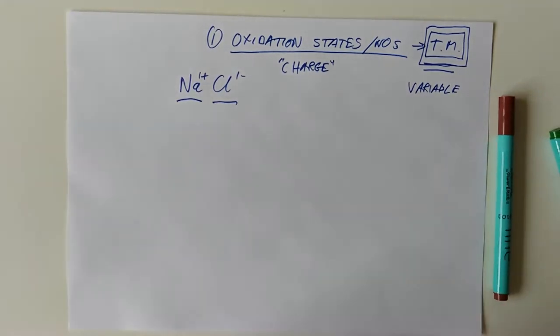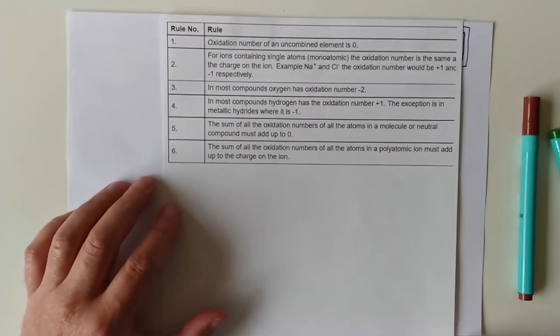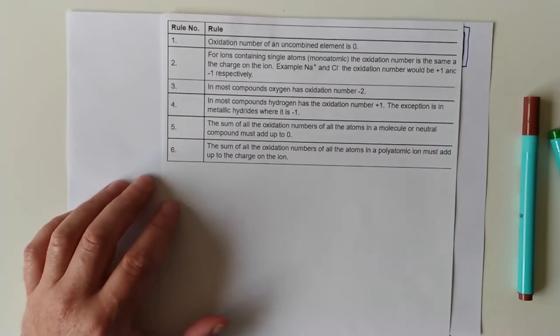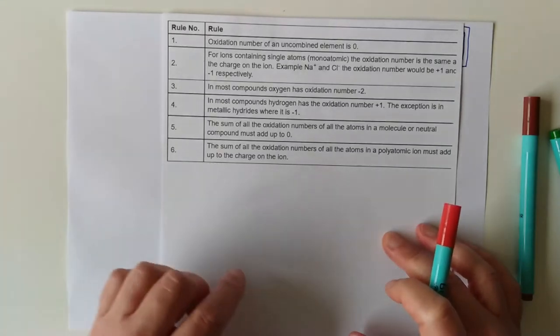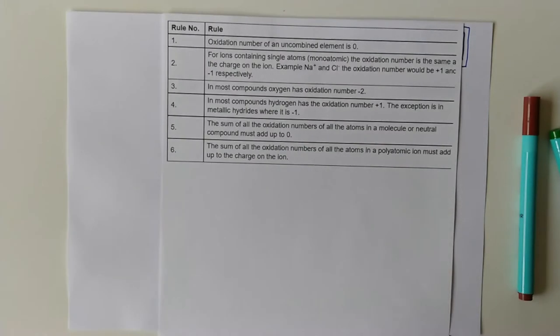So how are you supposed to figure it out then? Well, I've got here a few rules which I'm stealing from the Scholar document. And we can use these rules to figure out the valency, the charge, the oxidation state - it's all the same thing - of a transition metal in a given situation.